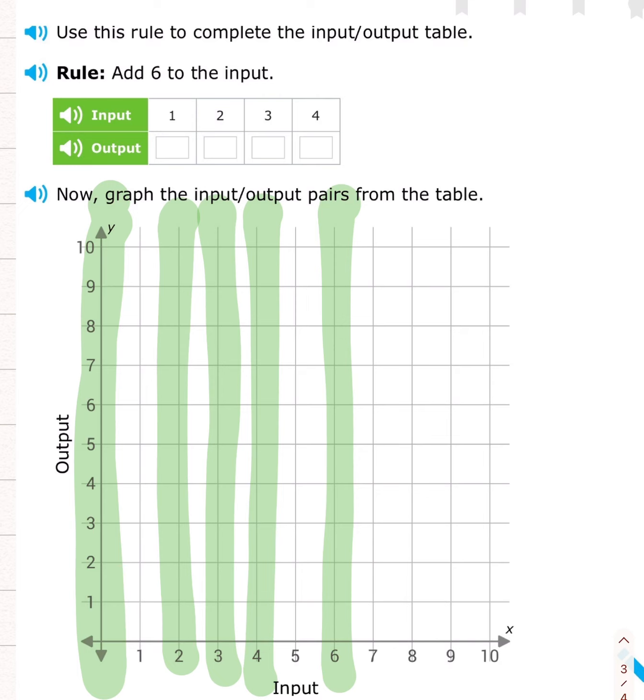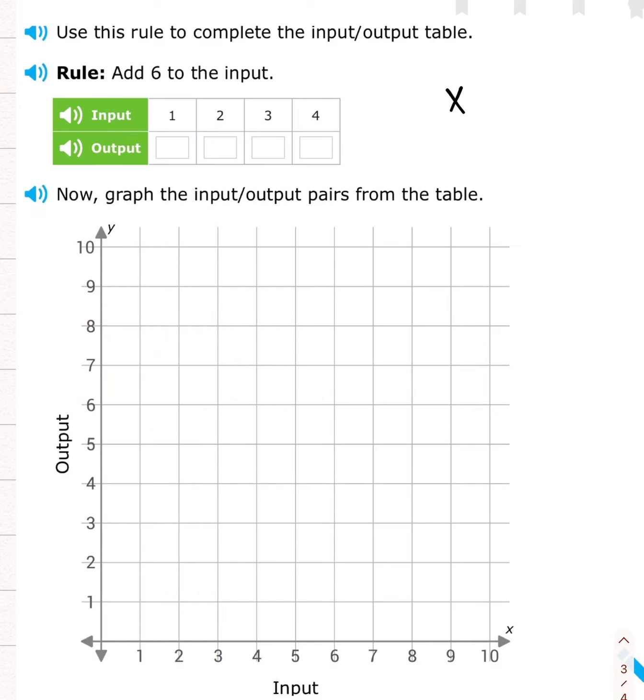Those are the x and y-axis. And we always write them in that order. We always write our axis, x first, and then y. Why is it in that order? Because x comes first in the alphabet. X, y, z.